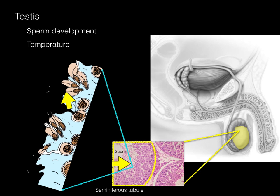The temperature necessary for sperm development is 3 degrees below body temperature in centigrade. So 37 degrees centigrade is body temperature, meaning about 34 degrees centigrade is necessary for sperm to develop. This is why the testes hang outside the body within the scrotal sac. It's also why muscles like the cremasteric muscle will pull the testes closer to the body or relax to let them hang farther away, to either increase or decrease temperature as needed.